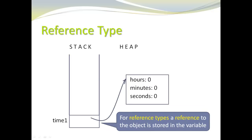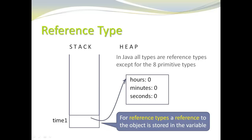Everything else in Java is a reference type. For reference types, a reference to the object is stored in the variable. Here I have a variable, time1, and this is of type Time — a class I wrote myself. Every time you write a class and create an object of that type, it is created on the heap. All types are reference types, with the exception of the 8 primitive types. When you look in the memory area next to time1, there is not the value directly — there is a reference, which really is an address that allows you to navigate to the object on the heap.